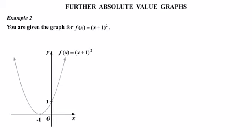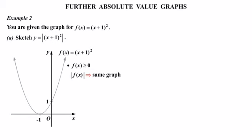Fantastic! How about we look at another example with a couple of similar graphs. We're given the graph for f(x) = (x + 1)². In part A we're asked to sketch y = |(x + 1)²|, so once again we're finding the absolute value of the whole function. The two conditions are: where f(x) ≥ 0, |f(x)| is the same graph; and where f(x) < 0, |f(x)| is a reflection in the x-axis.